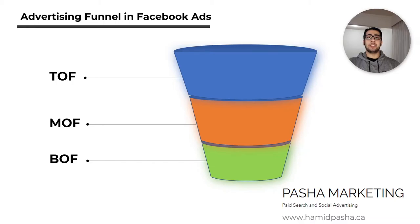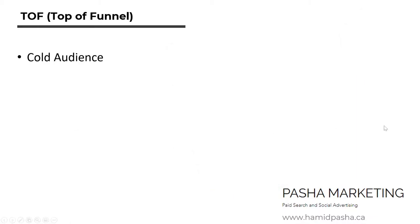Hello everyone, this is Pasha. In this video, I will explain the ad funnel on Facebook. Generally, advertisers use a sales funnel that has three layers: top of funnel, middle of funnel, and bottom of funnel. We will be going through each layer of the sales funnel and how you should use them in your Facebook ad structure.